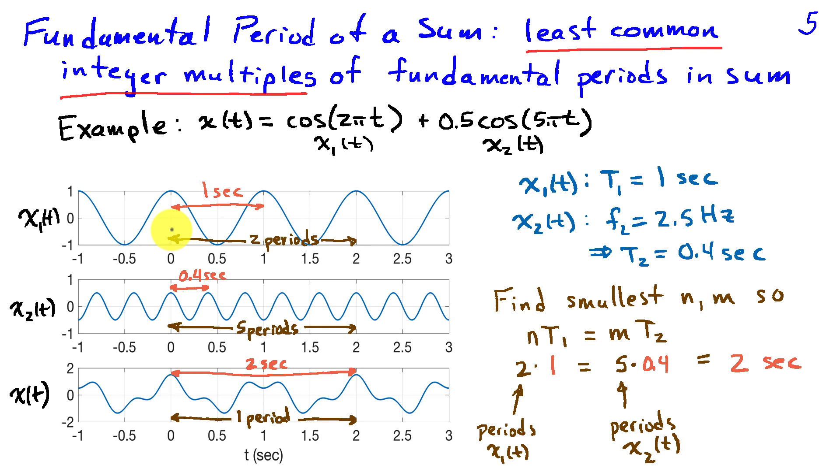n is the number of periods of the 1 hertz sinusoid. So I'm showing two periods of that sinusoid takes two seconds. This sinusoid has a period of two seconds.